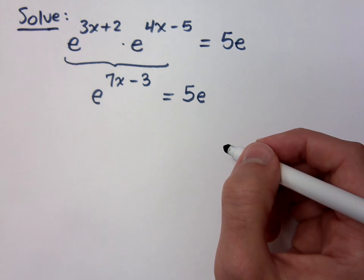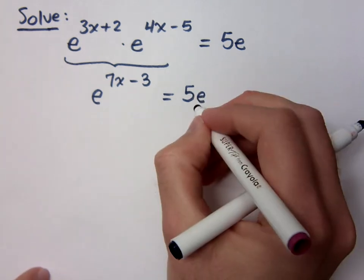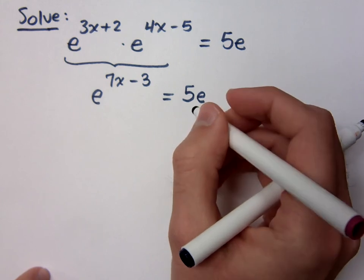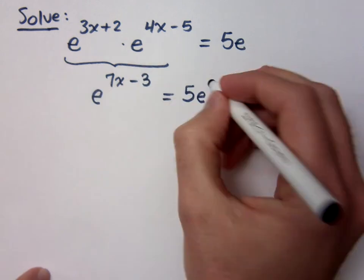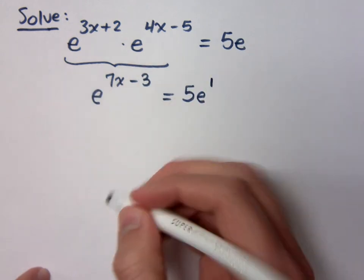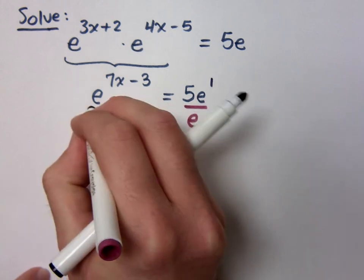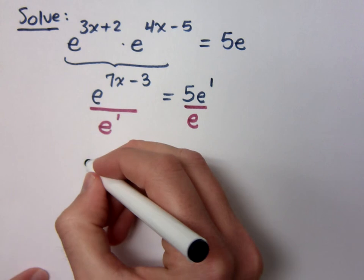I could take the natural log of both sides, but something else I can do here is I can actually divide both sides by e. It may seem kind of weird and like it doesn't make sense to do that, but understand this is e to the first, right? So if I divide by e and divide by e here, of course that's e to the first, then what do I have on the left side now?